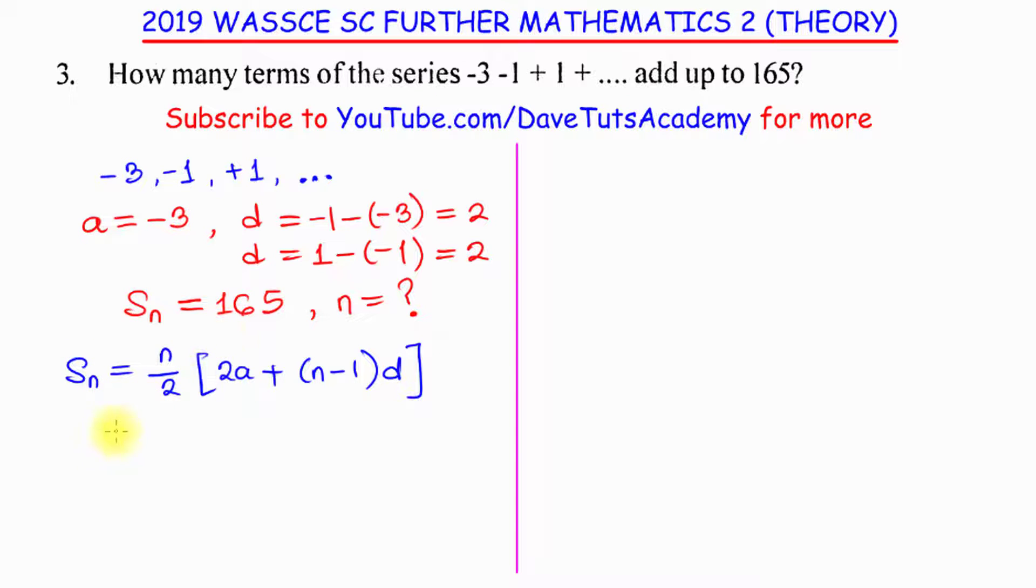So, this equation is what we can use to actually solve for n because we are given Sn, n is what we don't know, the number of terms. But the sum of that number of terms has been given as 165, so we have 165 equals n over 2 multiplied by 2A. A is minus 3, so we have 2 times minus 3 plus n minus 1 multiplied by D. And what is our D, the common difference, that is 2. So, we just need to open up this and solve appropriately.